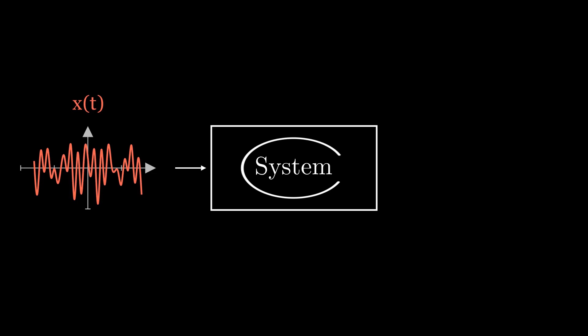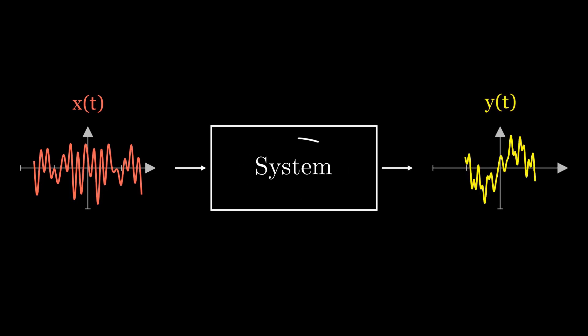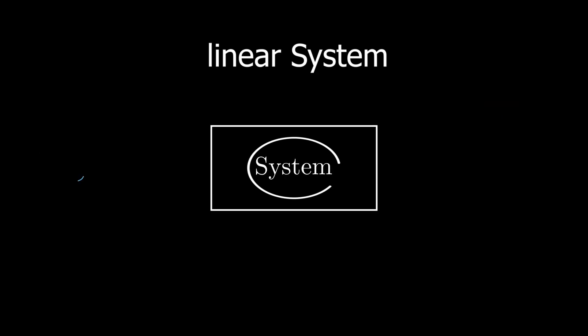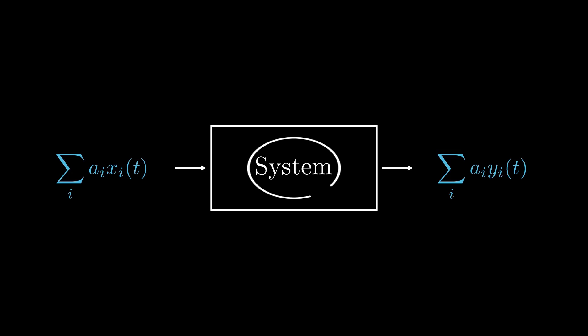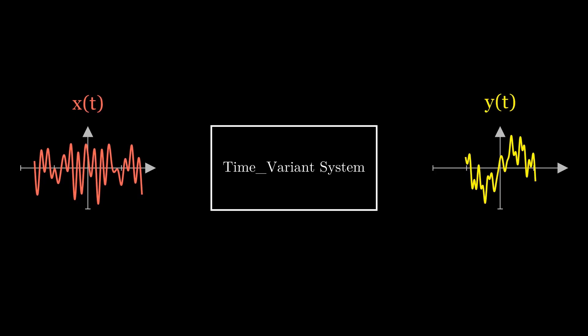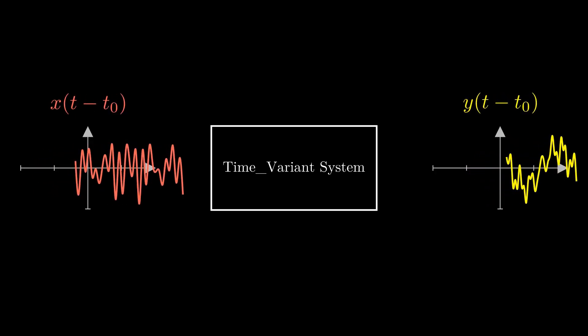A system is a device that processes an input signal and produces an output signal which is in general more desirable than the input one. Linear systems are systems whose output for a linear combination of inputs is the same as a linear combination of individual responses to those inputs. Time invariant systems are systems where the output does not depend on when an input was applied. When x(t) leads to y(t), then when the input is delayed by a certain amount of time, the output will delay by the same amount.